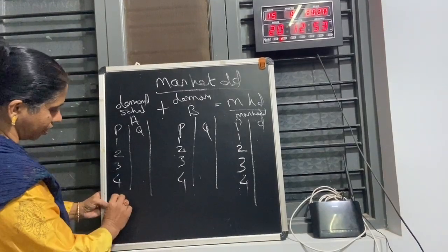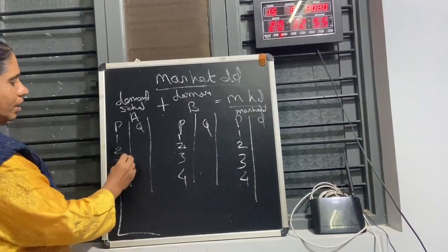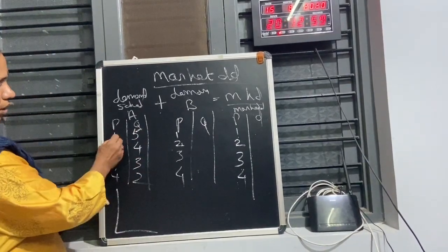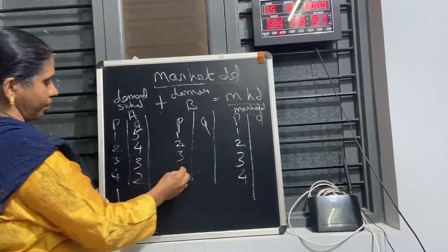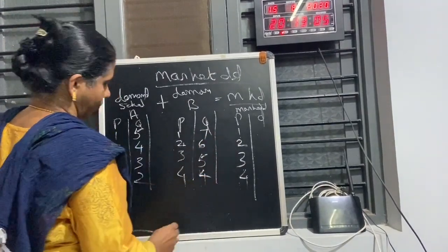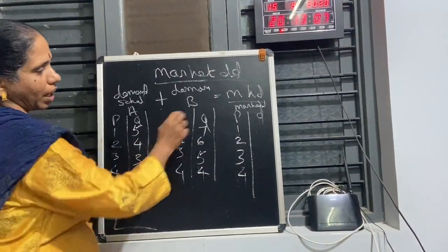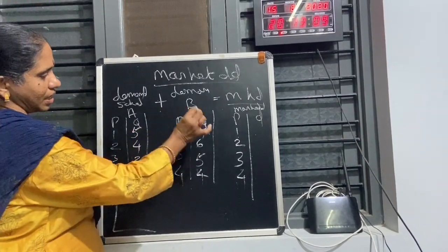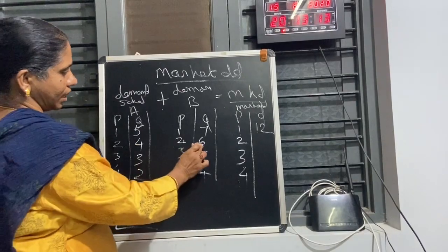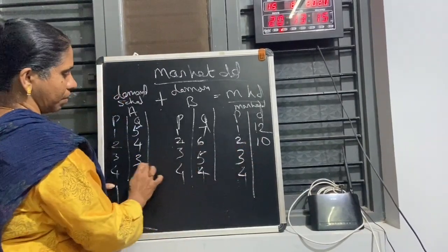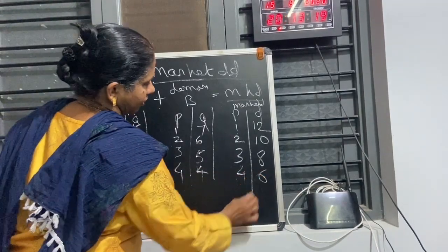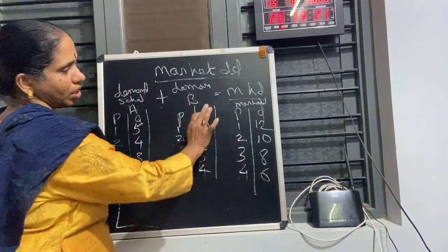I have to give you space for drawing also. So now what is the market demand? At price 1: 5 plus 7 equals 12. At price 2: 4 plus 6 equals 10. At price 3: 3 plus 5 equals 8. At price 4: 2 plus 4 equals 6. So adding these gives us the market demand.